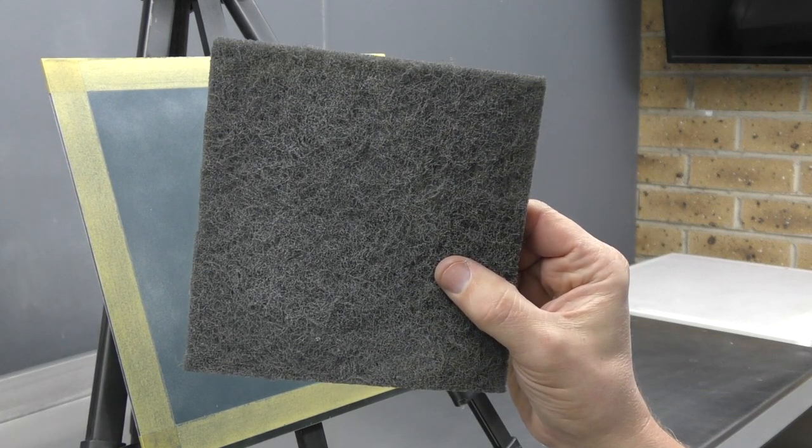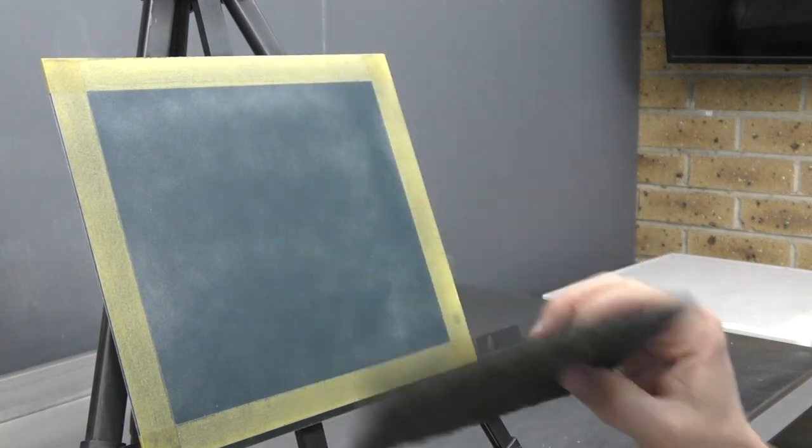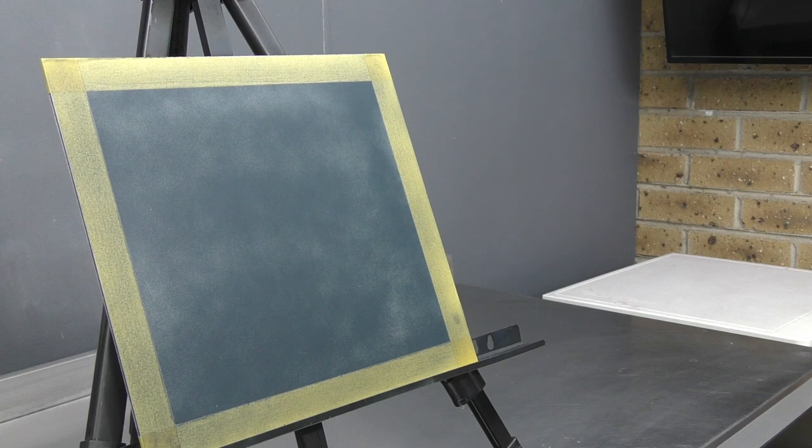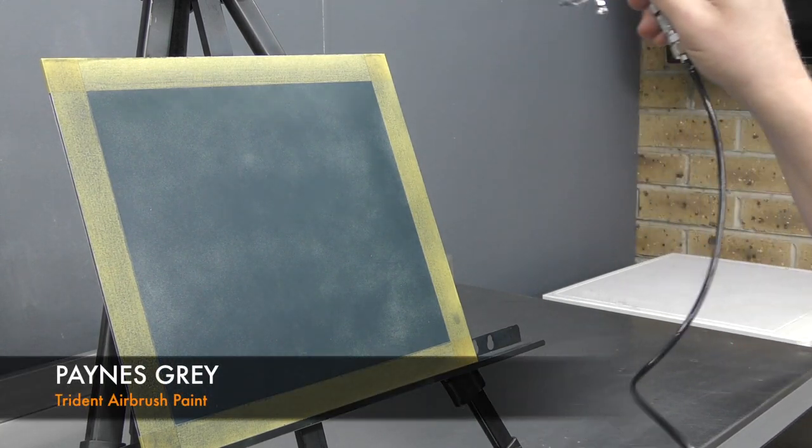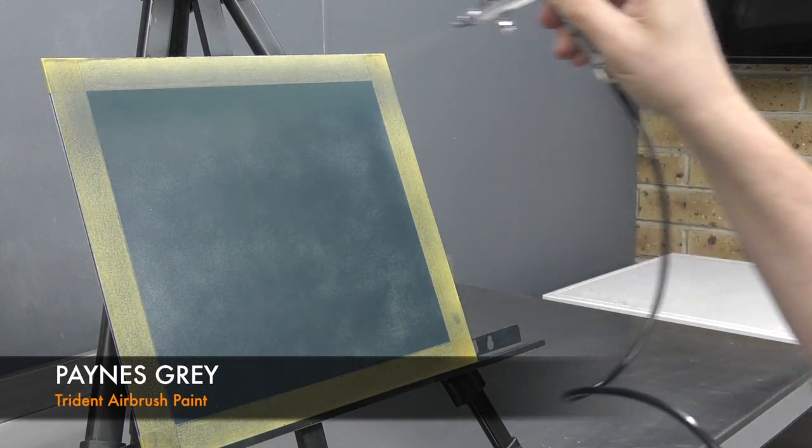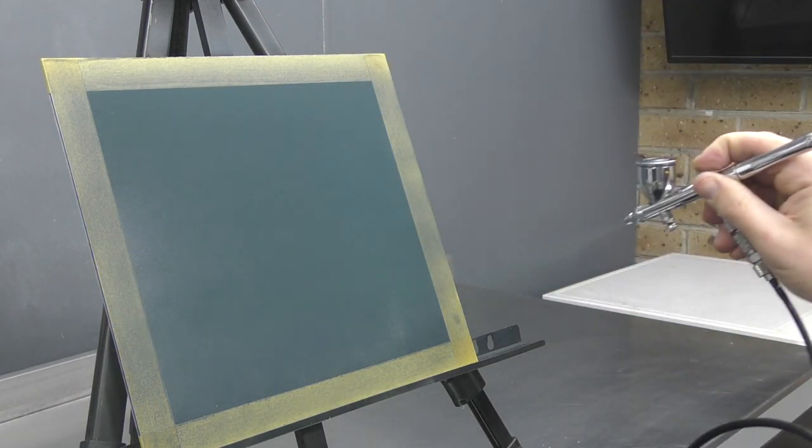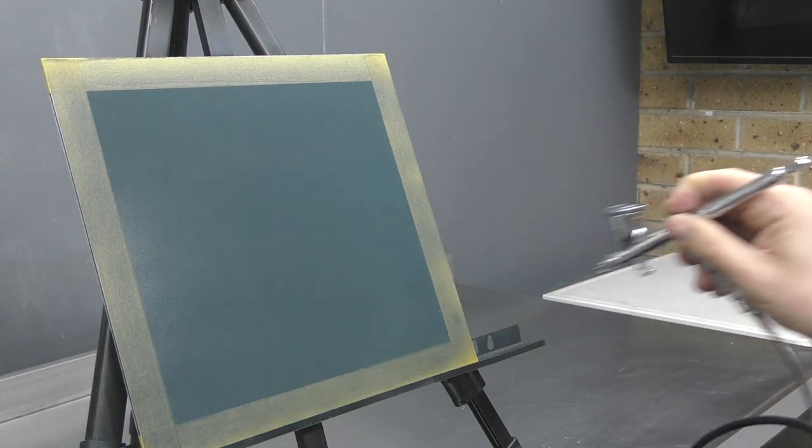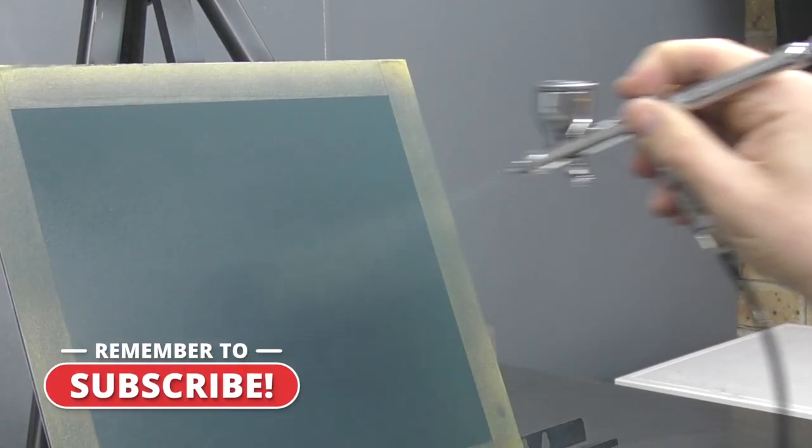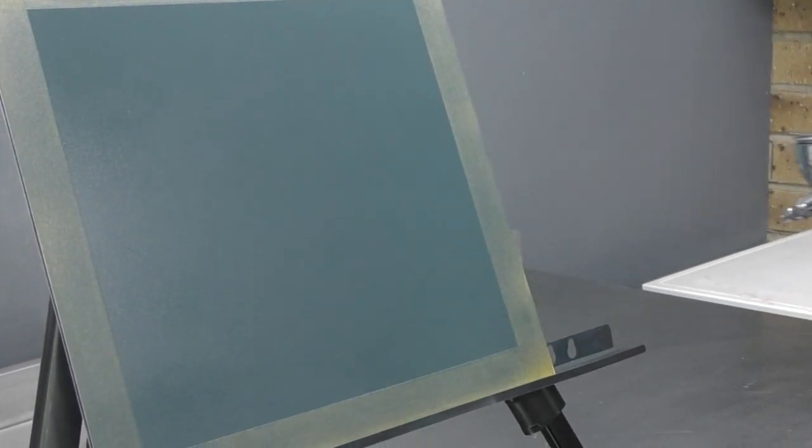And I used a grey scotch pad just to sand the surface so that our paint can adhere. And what I'm using for the background colour is a Payne's grey by Trident. And I just want to get a nice even coverage and I'm drying in between each coat. So take your time to build it up. Build up your base colour with lighter coats and more often is always a better option than going too wet and too heavy.